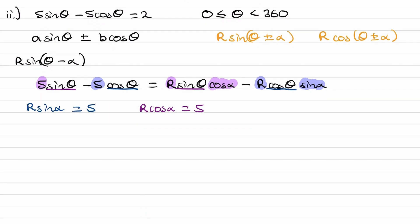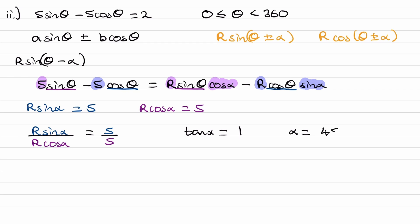We can solve those two equations simultaneously to find R and alpha by dividing them. R sine alpha divided by R cos alpha equals 5 over 5. On the left hand side, the R's cancel and sine over cos becomes tan alpha. The right hand side gives 1, so inverse tan of 1 gives alpha equals 45 degrees.